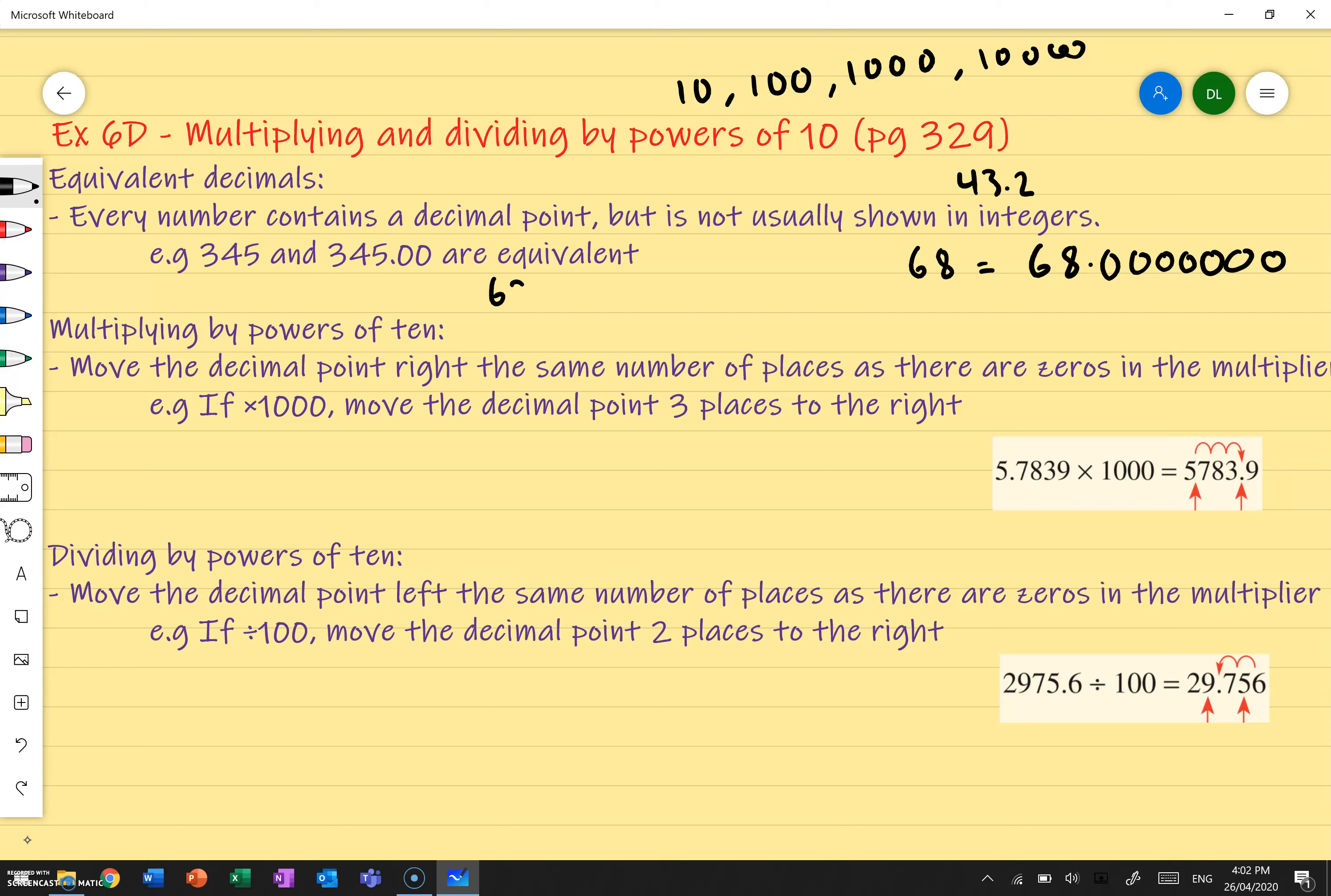For example, 63.07 is going to be the same as 63.07 and then 0000 dot dot dot. But it's not the same as 63.0000.07. That is not the same thing because it's a 7 in the hundredths place, but in this case, it's a 7 in the ten thousandths place. So we've got to make sure we're adding zeros to the right side after the decimal point.